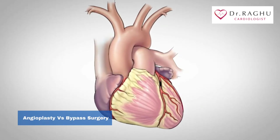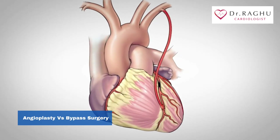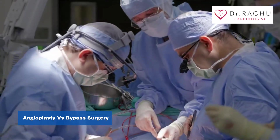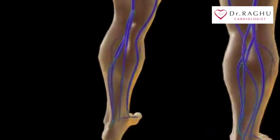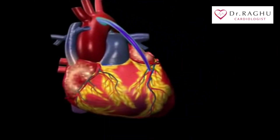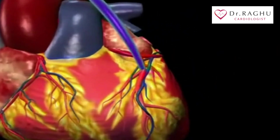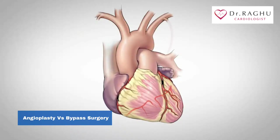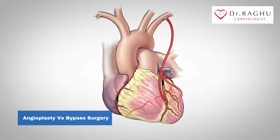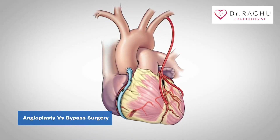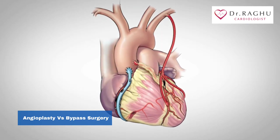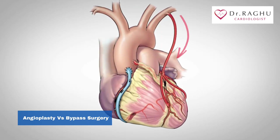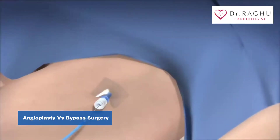During bypass surgery, surgeons take a part of a healthy blood vessel — either from inside the individual's chest wall or from their lower leg — and attach it above and below the blocked artery to restore blood flow. As a result, the blood bypasses the blocked part of the blood vessel and flows to the heart.